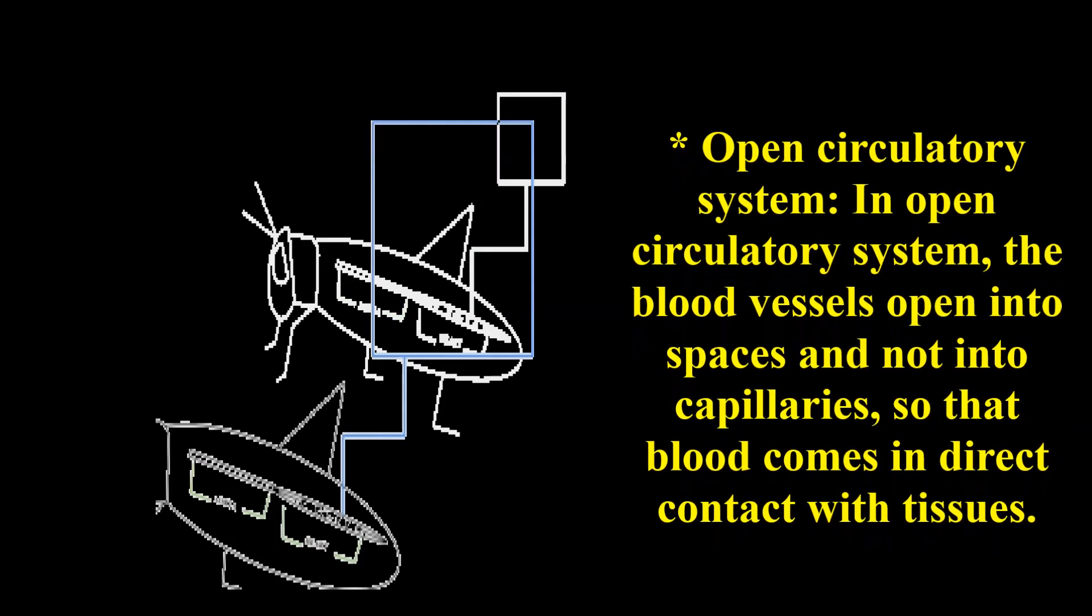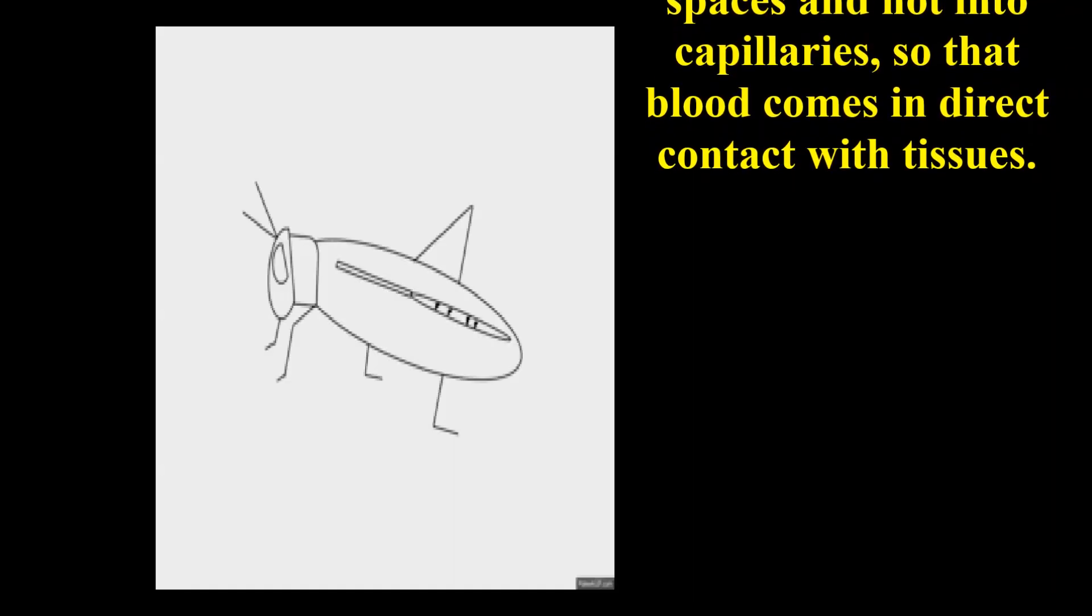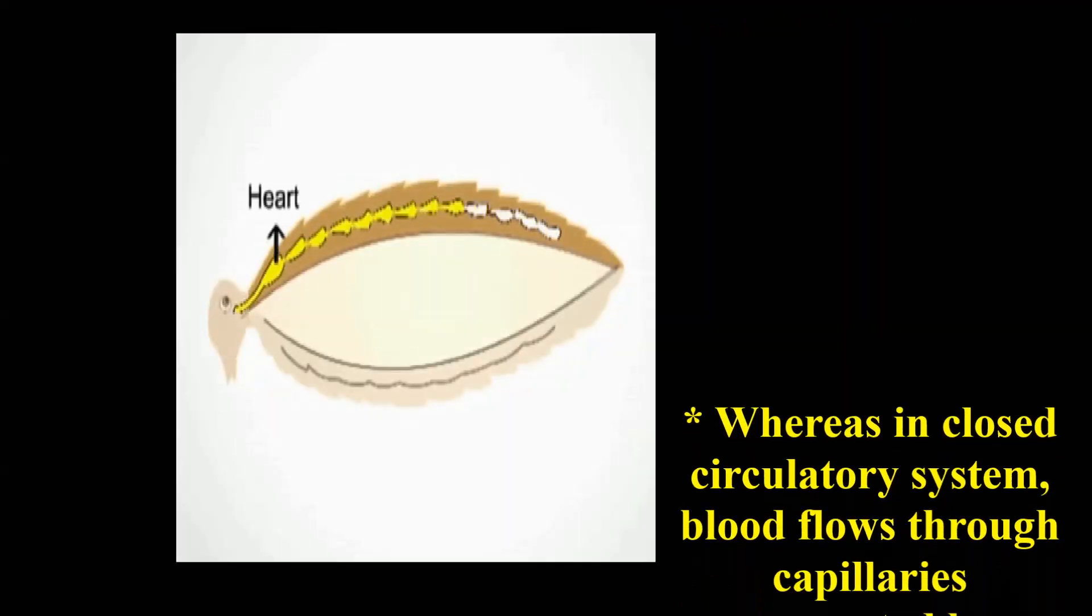In open circulatory system, the blood vessels open into spaces and not into capillaries, so that blood comes in direct contact with tissues. Whereas in closed circulatory system, blood flows through capillaries connected by arteries and veins.